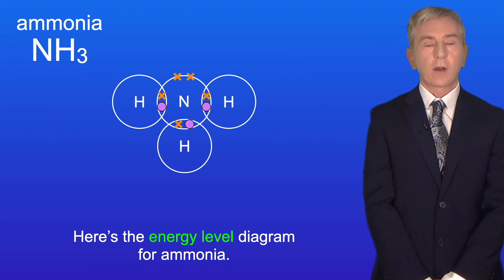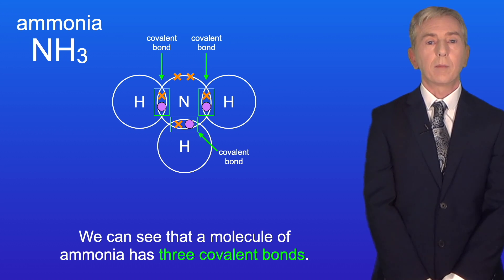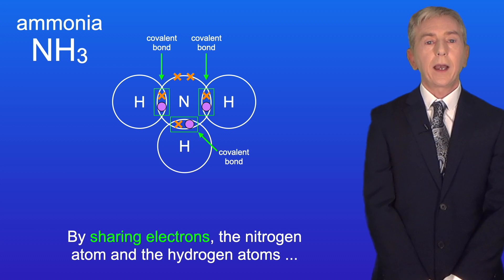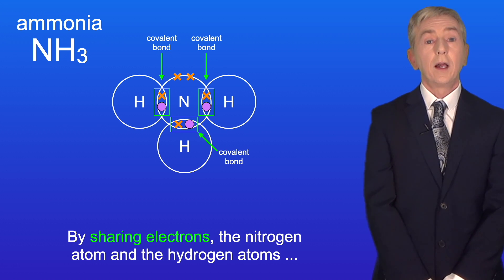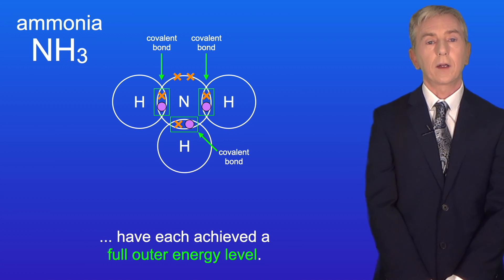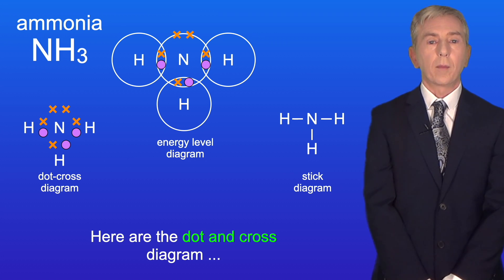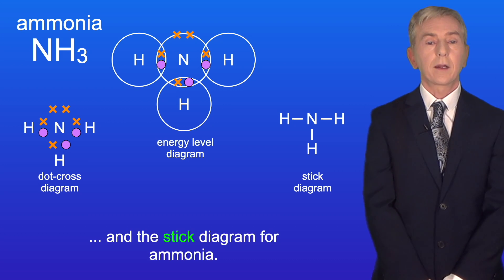Here's the energy level diagram for ammonia. We can see that a molecule of ammonia has three covalent bonds. By sharing electrons, the nitrogen atom and the hydrogen atoms have each achieved a full outer energy level. Here are the dot and cross diagram and the stick diagram for ammonia.